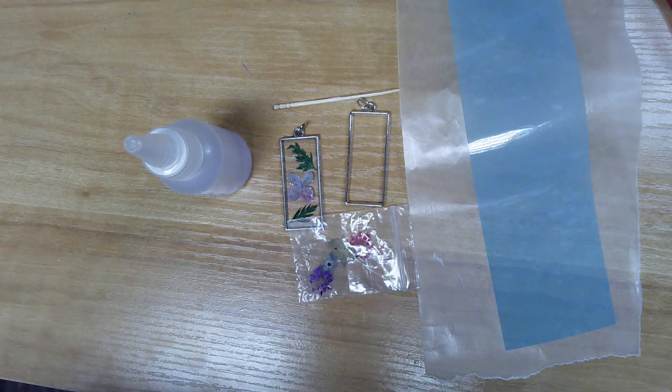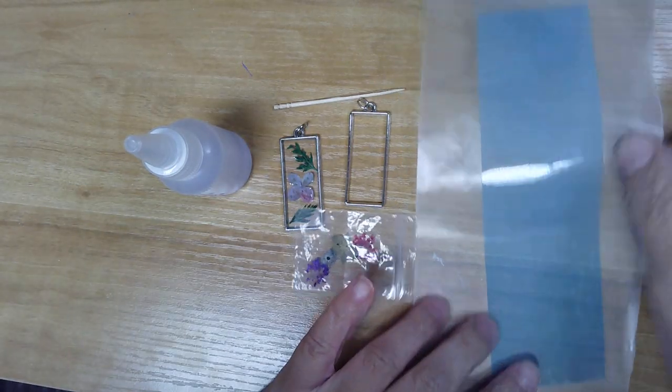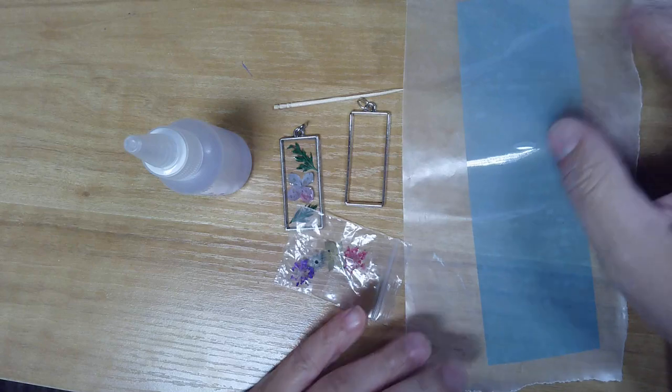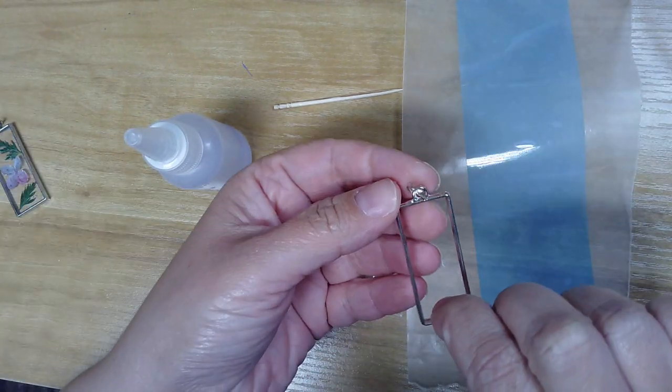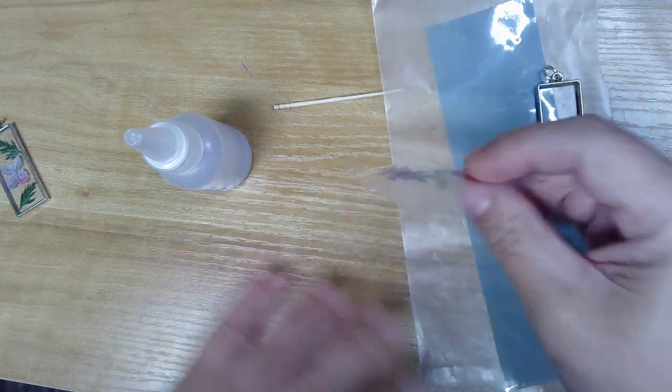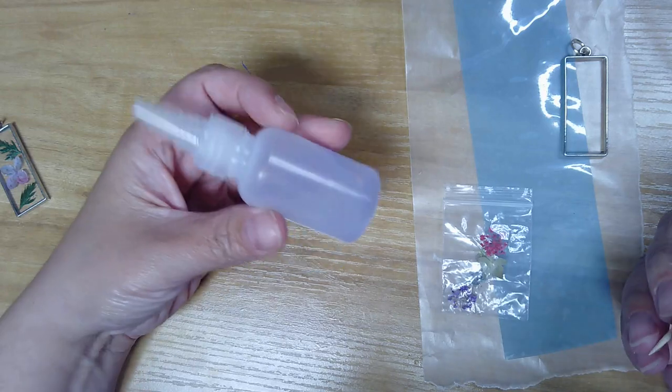Hello everyone, welcome to Homemakers. Today we're going to be working on a resin pendant. In your kit you should have this piece of wax paper with some tape on it, an empty pendant with a chain already attached, a few dried flowers, a toothpick, and this is UV resin.